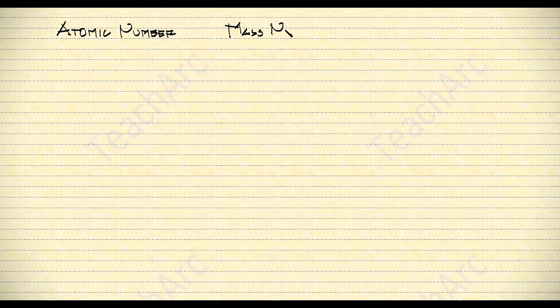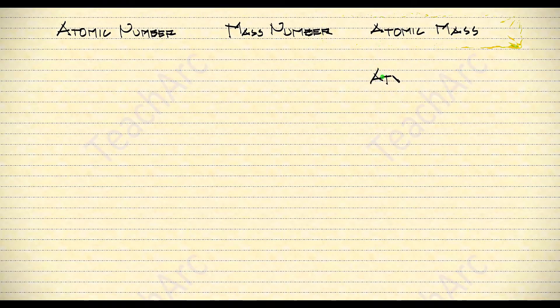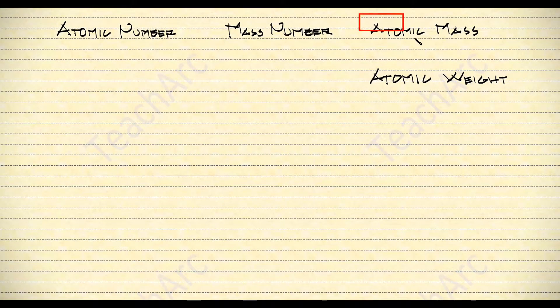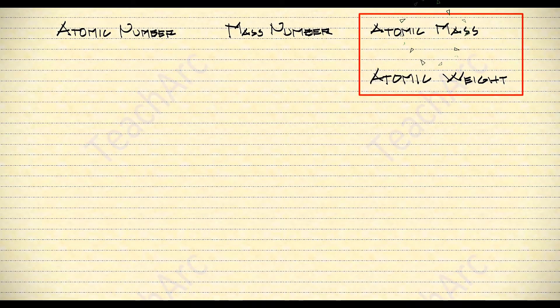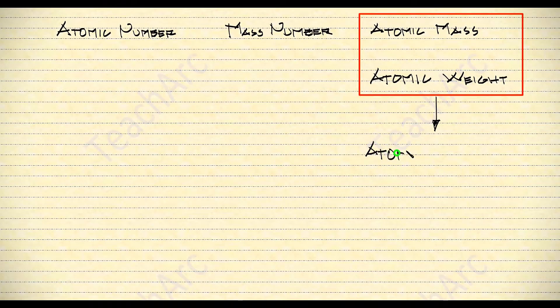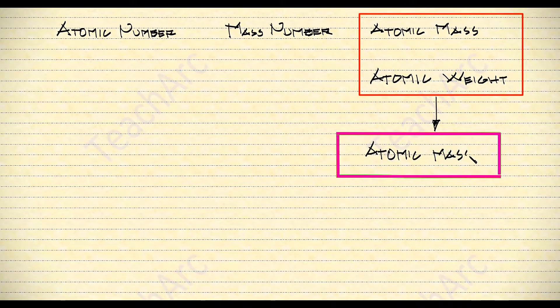Chemistry has a lot of confusing terms. We have atomic number, mass number, atomic mass, atomic weight, among others. Atomic mass and atomic weight are basically the same — let's hope physics will forgive us for equating mass and weight. Using the term atomic mass is actually more accurate.